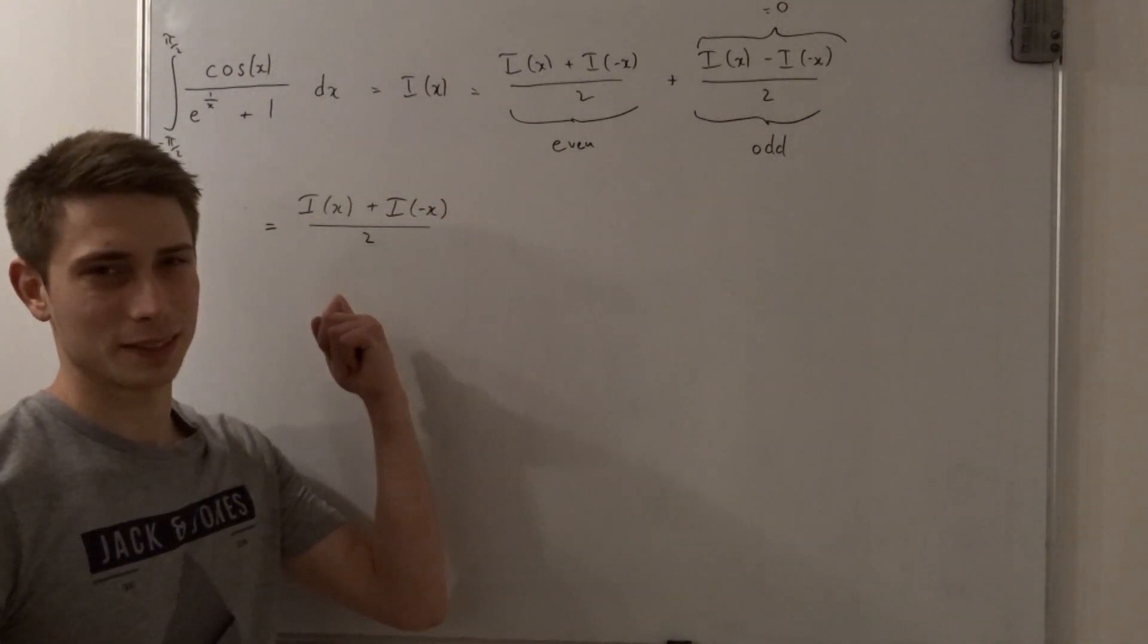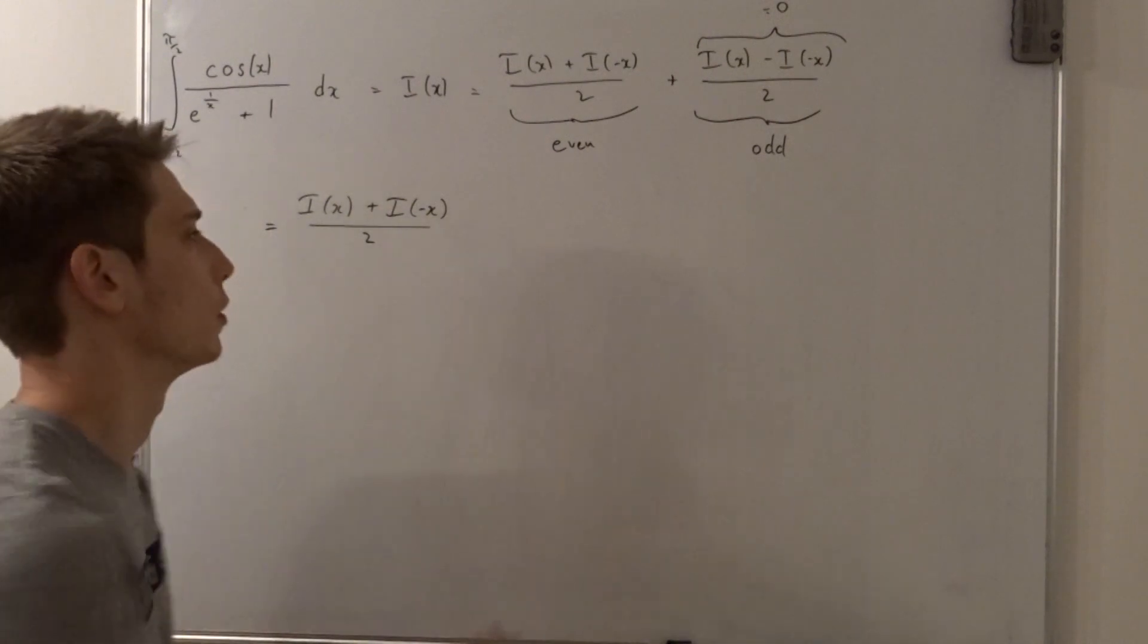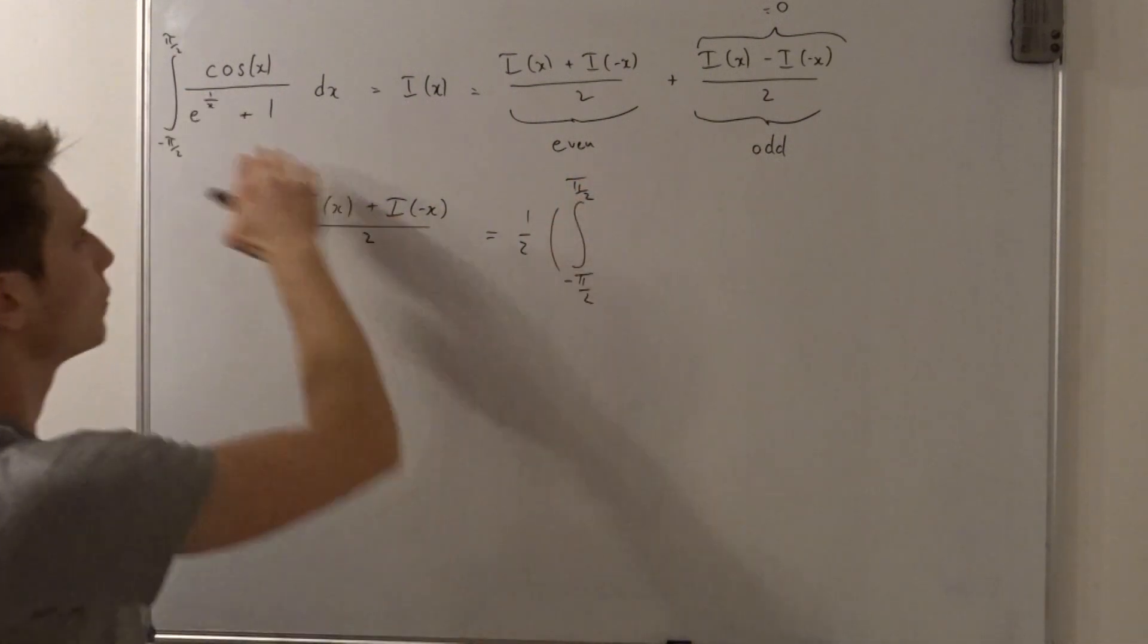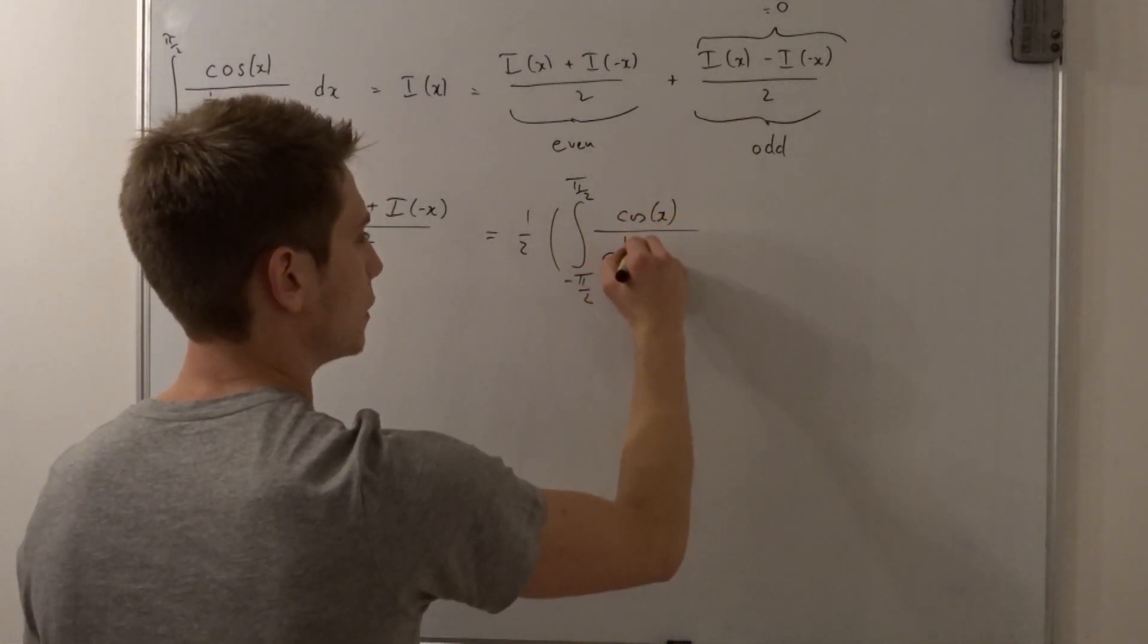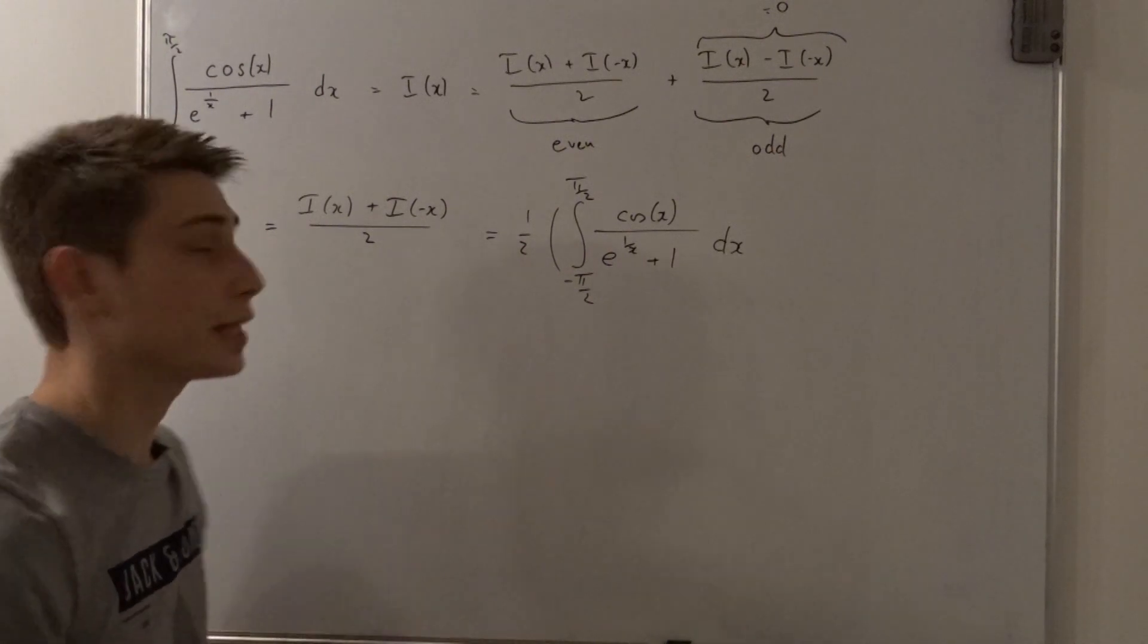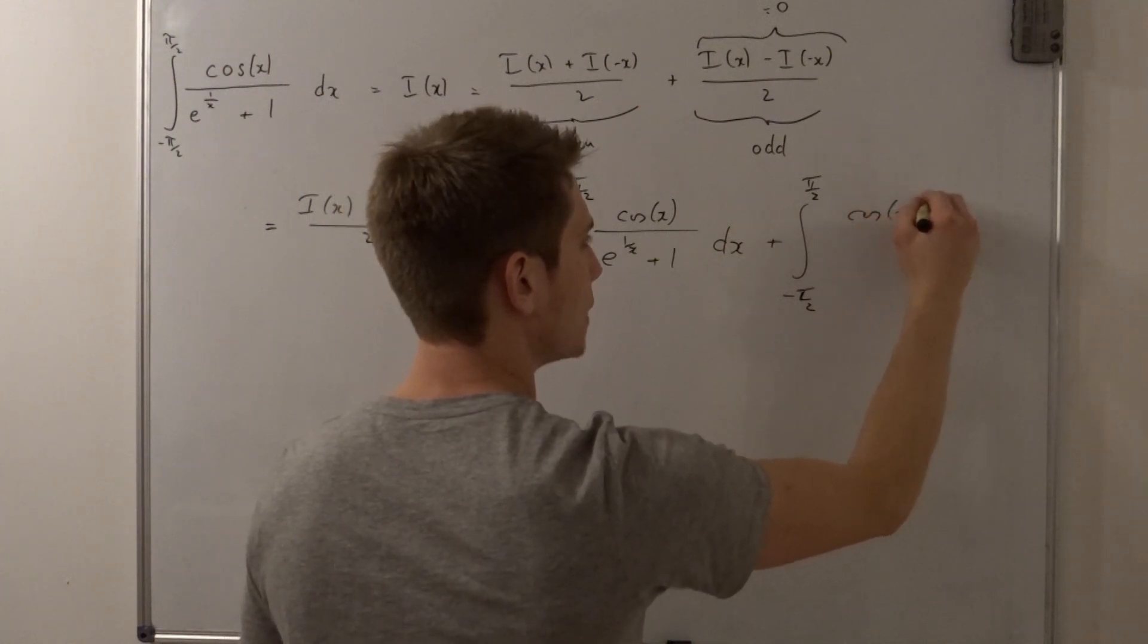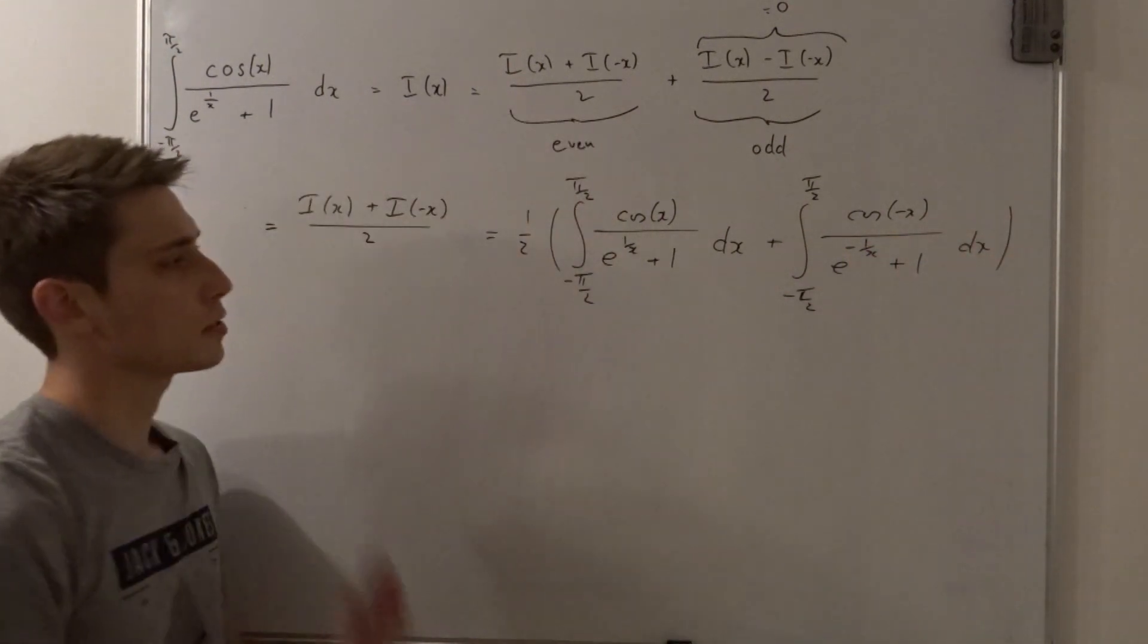But it doesn't look much simpler because we've got two integrals now. But let's just write it out and then we will see if we can simplify anymore. So let's go ahead. That's one half times I just factored the one half out. So that's one half times the integral of this integral in terms of x. So that's the cosine of x divided by all this chunk. Okay and times dx and now plus i of minus x and now we only have to plug in minus x into all the axes here. So that's plus the integral from minus pi over 2 to pi over 2 of cosine of minus x divided by e to the minus 1 over x plus 1 dx. Okay so far so good.